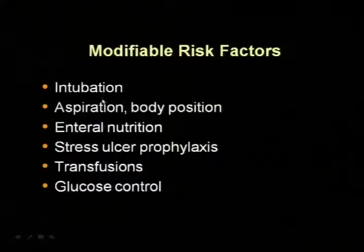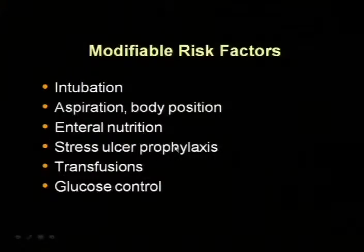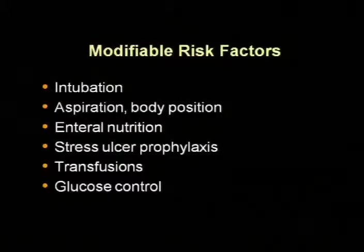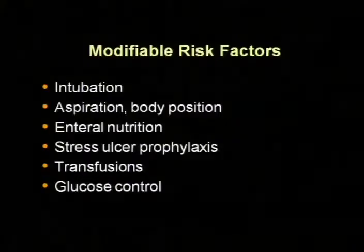Modifiable risk factors include: avoid intubation or make it as short as possible; keep the patient in a 30-degree upright position; nutrition is helpful to maintain the ability to fight infection; prevention of stress ulcers is important on mechanical ventilation because it reduces the risk of bleeding, and that risk is greater than the risk of pneumonia; and managing glucose levels better than we used to, although tight control is not as necessary.